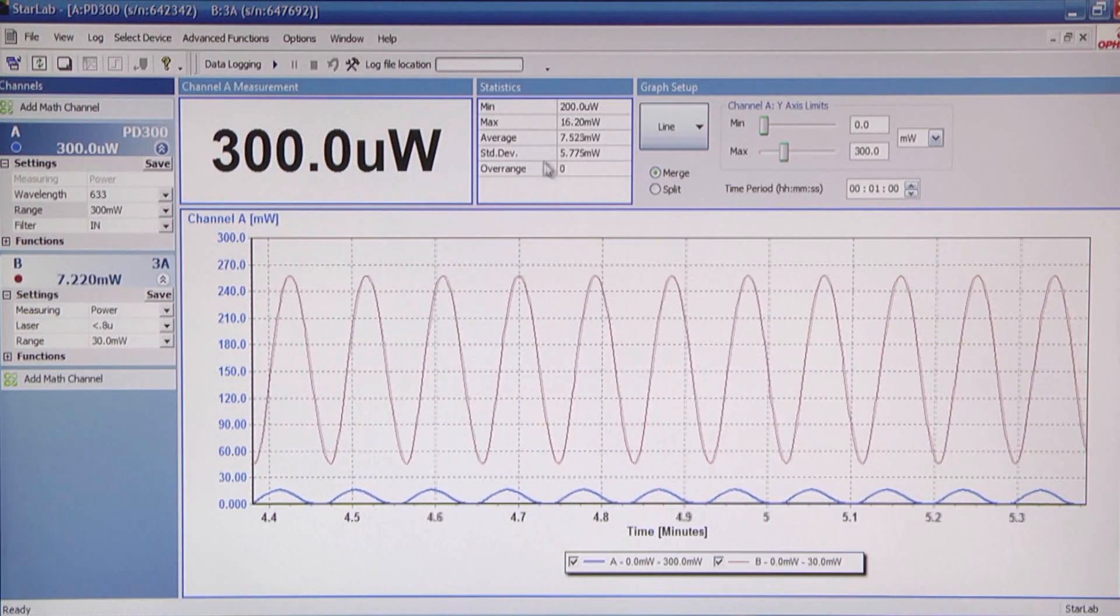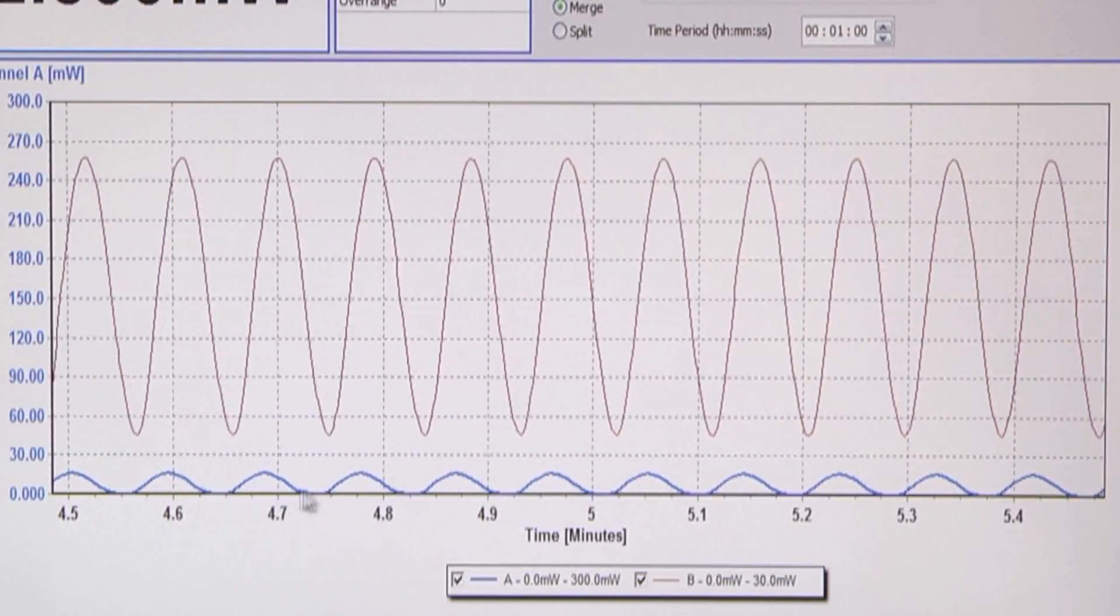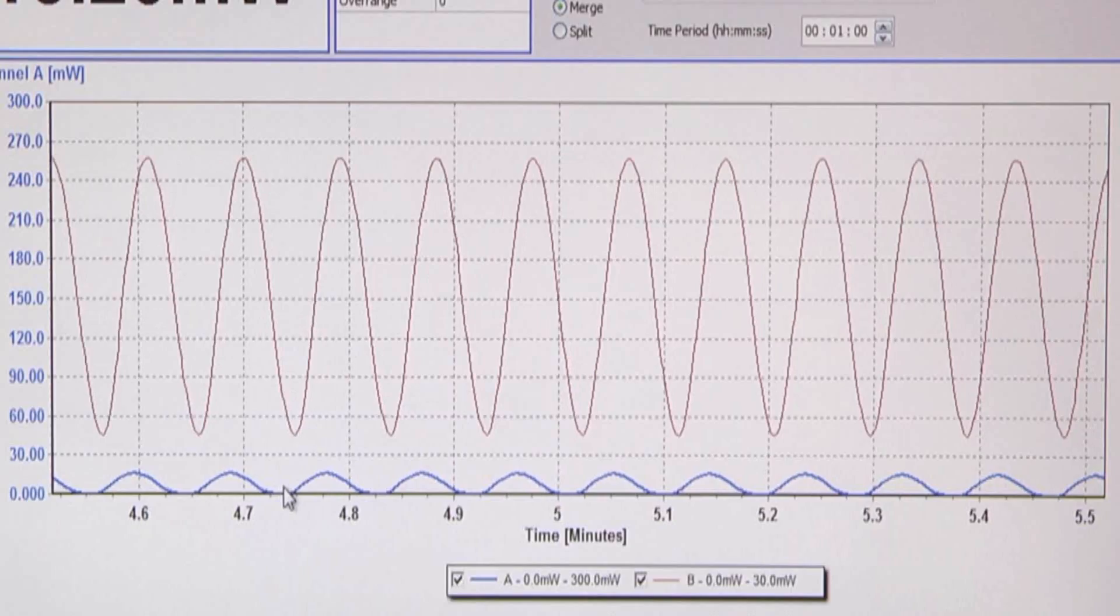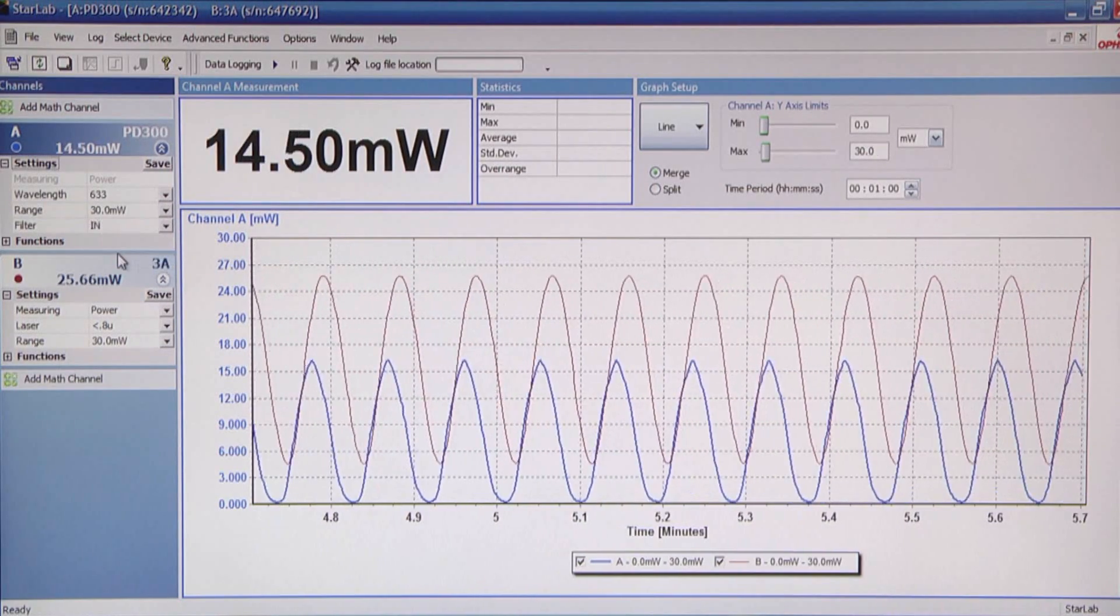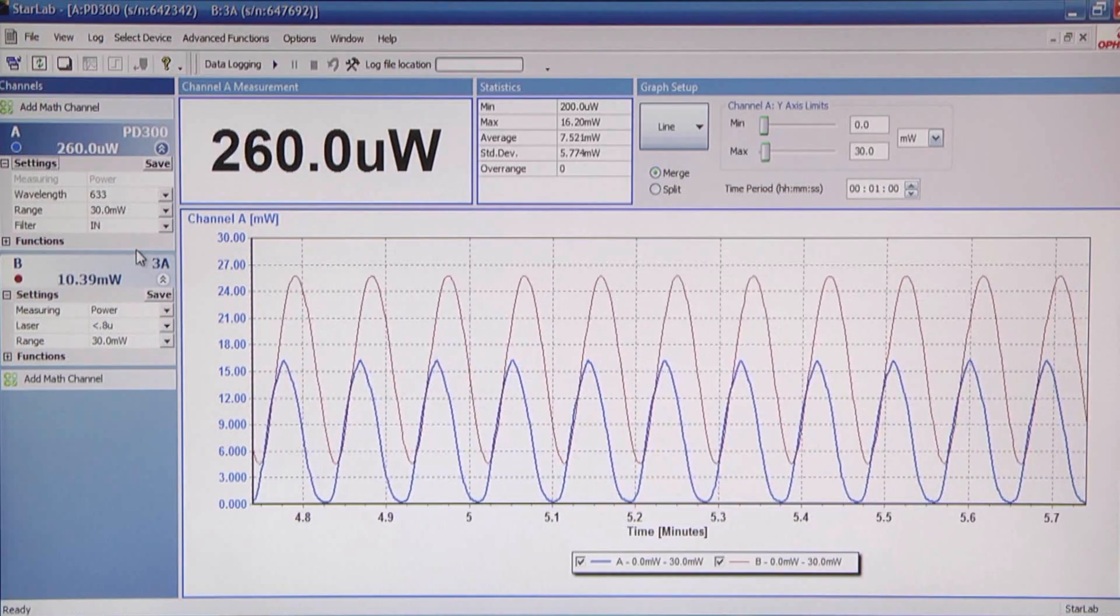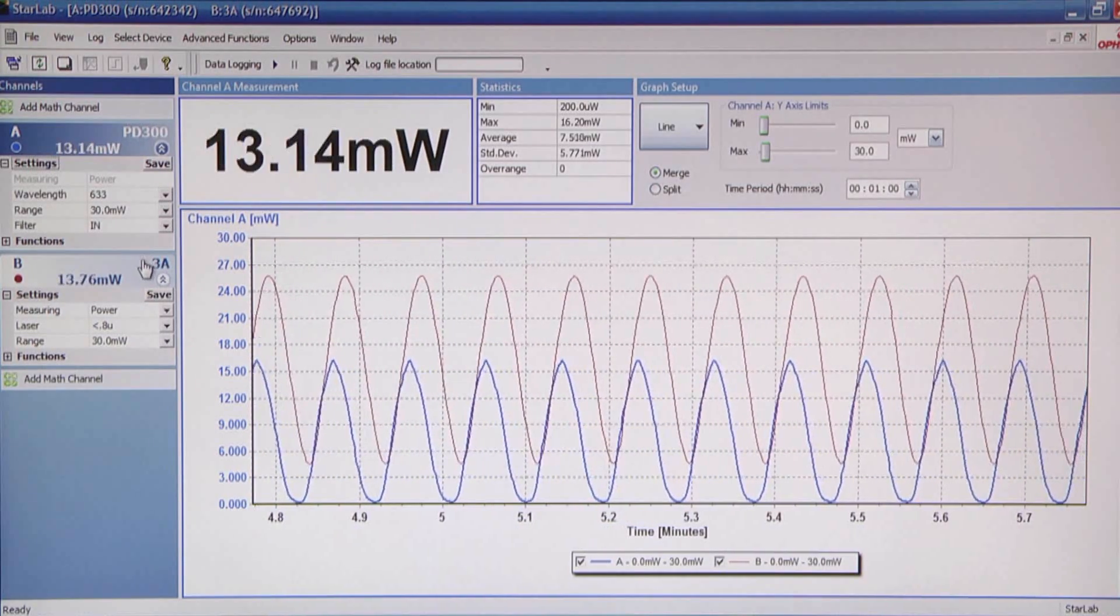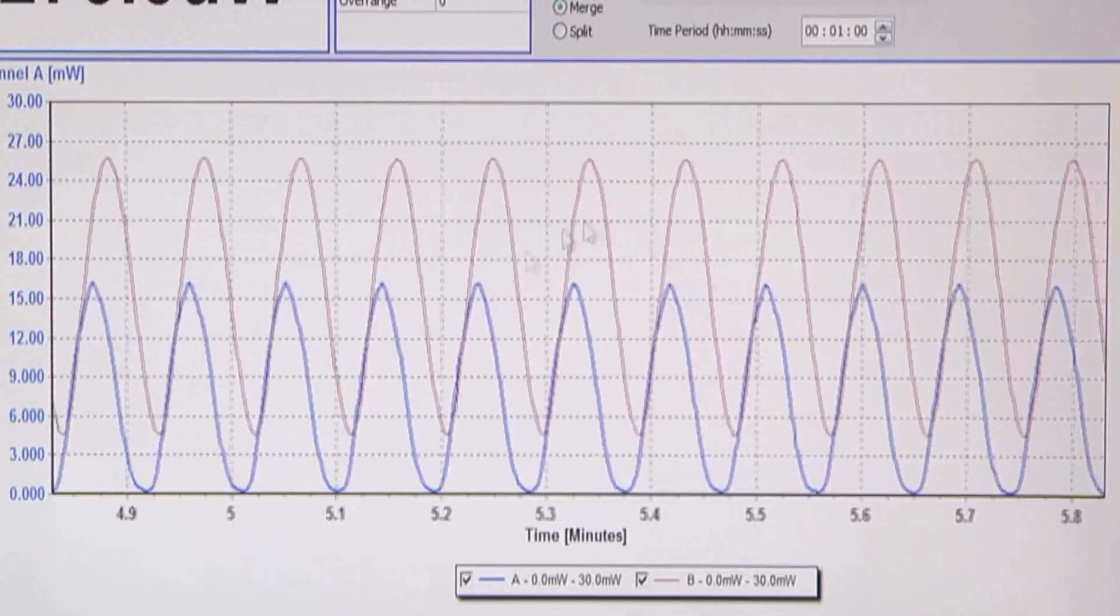The box colors also identify the channel. Let's choose the 30 milliwatt range so the reading will not be so small. We'll leave the other settings the same. Now we show both graphs on the same screen.